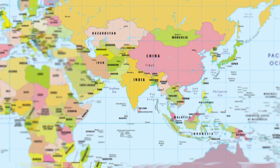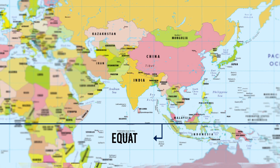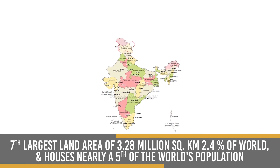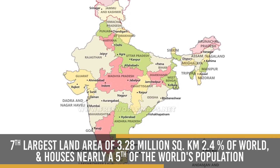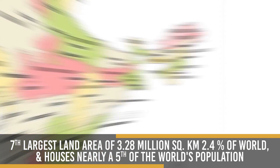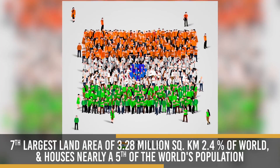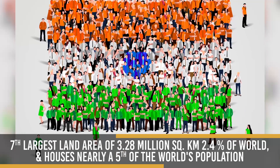The Indian subcontinent, located in South Asia north of the equator, has the second largest arable land. India occupies the 7th largest land area of 3.28 million km², which is 2.4% of the world, and houses nearly a fifth of the world's population.